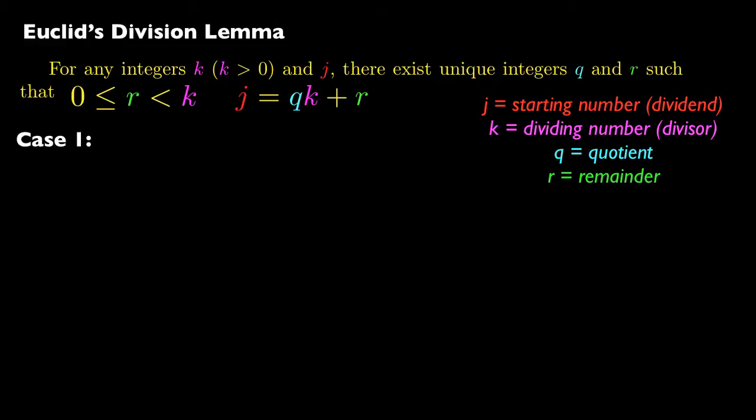So let's do this by cases. First of all, k has to be greater than 0, and so either k is 1 or k is greater than 1. So if k is equal to 1, it's very easy to find a quotient and a remainder. Because we could write j, our starting number, is equal to j times 1, which is k, plus 0. In other words, the quotient is equal to j, and the remainder is 0. That makes sense, because whenever we divide by 1, the answer is unchanged. The quotient is just going to be the number you start out with, and there will be no remainder at all.